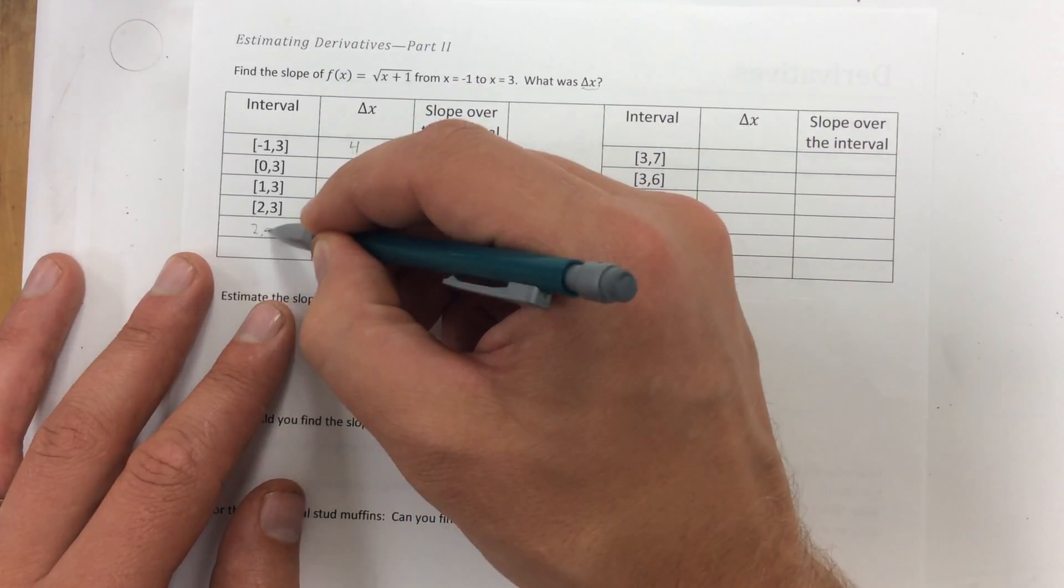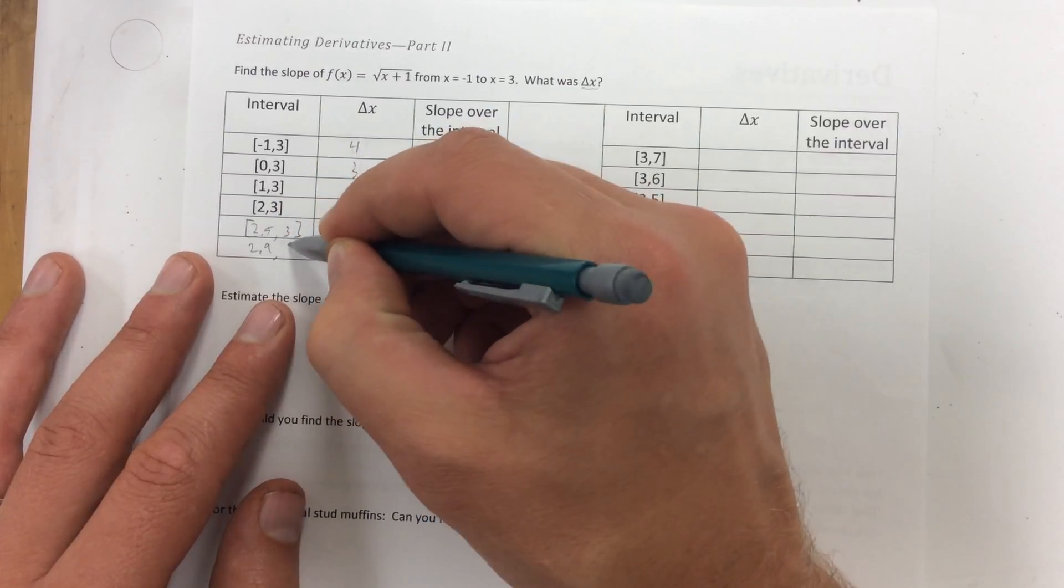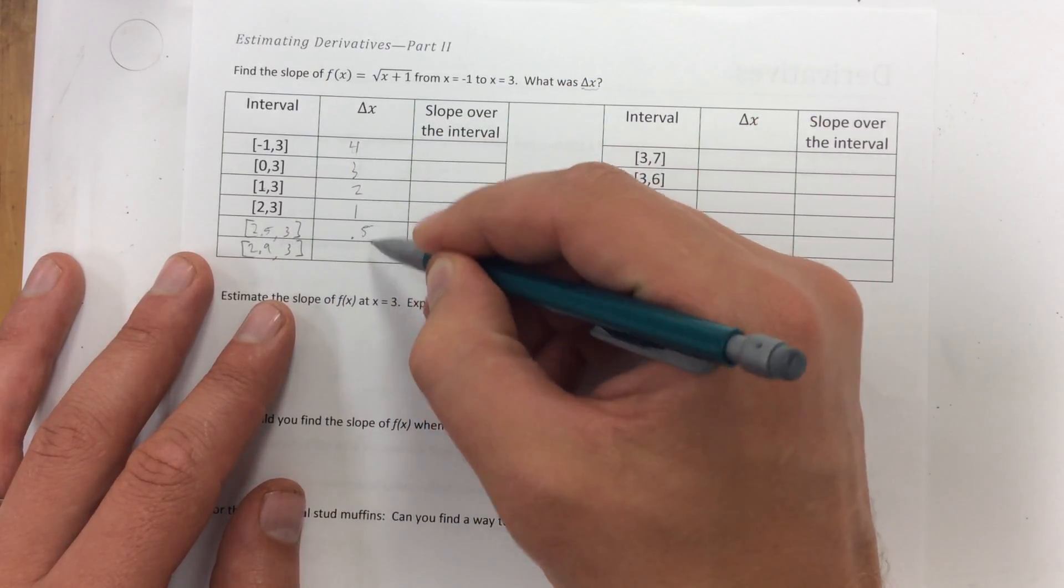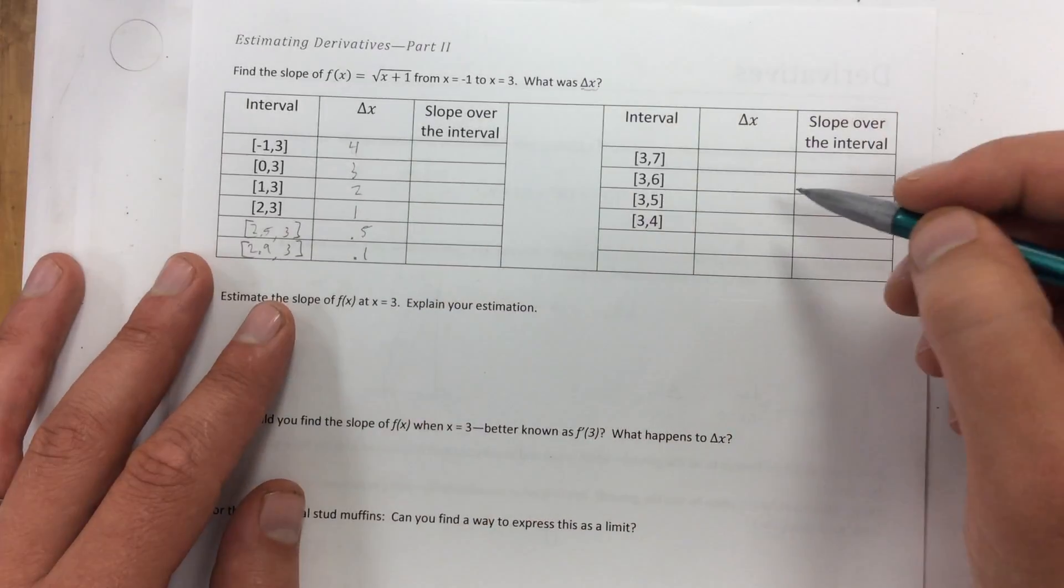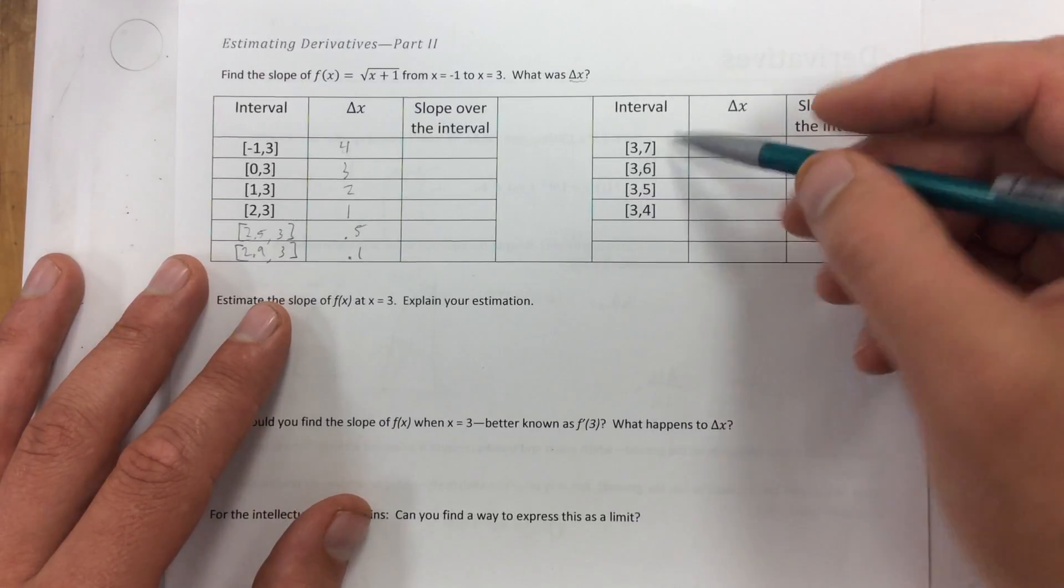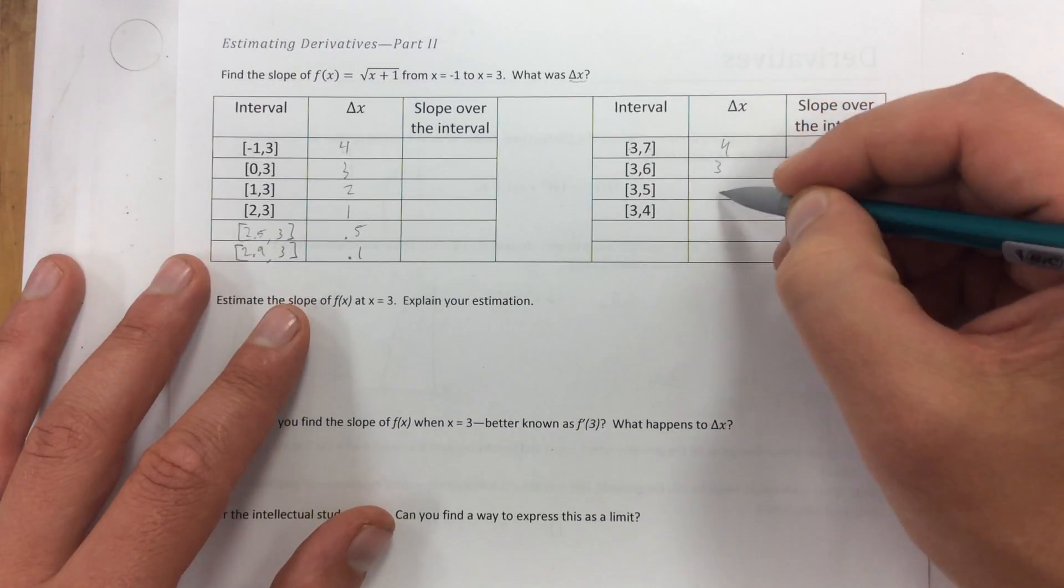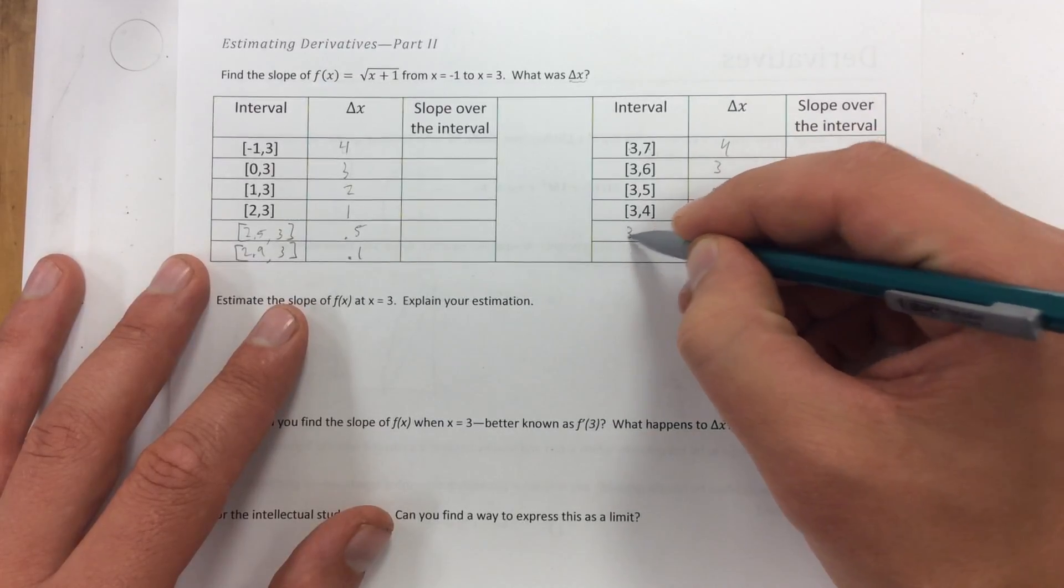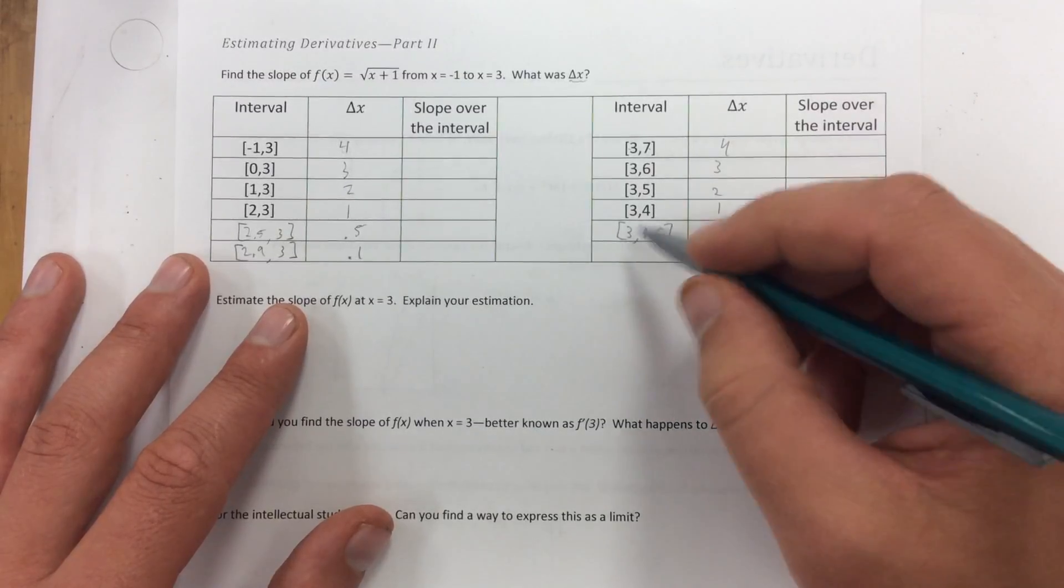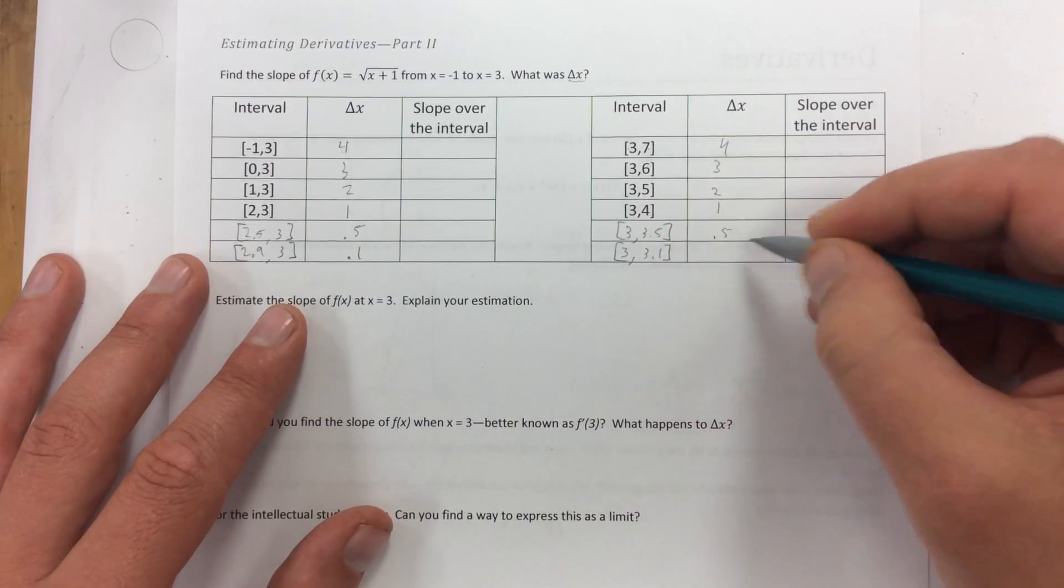Let's try some numbers close here. Let's try 2.9 to 3. So here would be 0.5. Here would be 0.1. So we're going to do the same thing coming from the other direction. From 3 to 7. 4, 3, 2, 1. 3 to 3.5. It's going to be 0.5. 3 to 3.1. It's going to be 0.1.